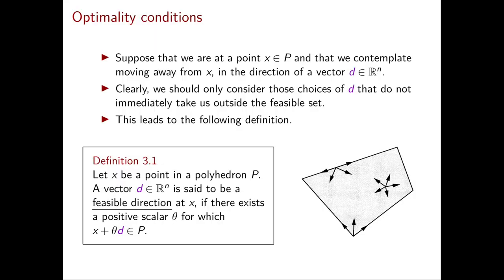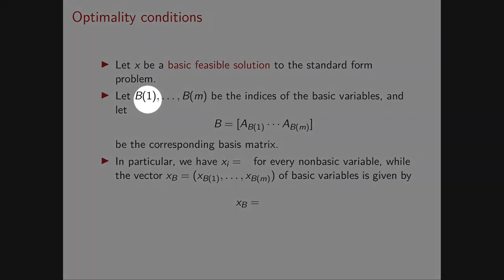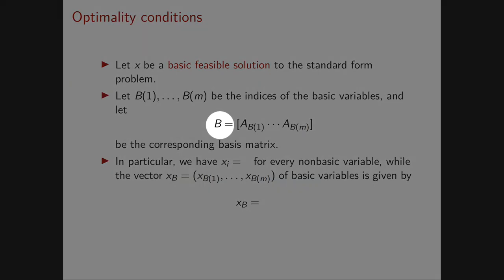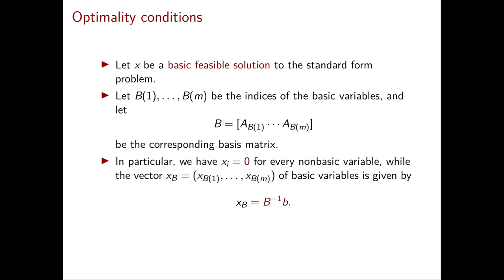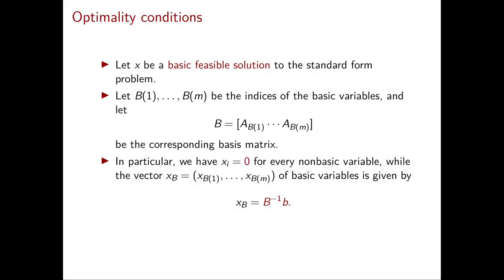Now we want to see what happens when we move along a feasible direction starting from a basic feasible solution. Using our notation from chapter 2, we denote by b_1 through b_m the indices of the basic variables, and by B the corresponding basis matrix with columns A_{b_1} through A_{b_m}. We know that for every non-basic variable, x_i equals 0, while the vector x_B of the basic variables is given by B inverse times b. These formulas will be fundamental throughout this chapter.